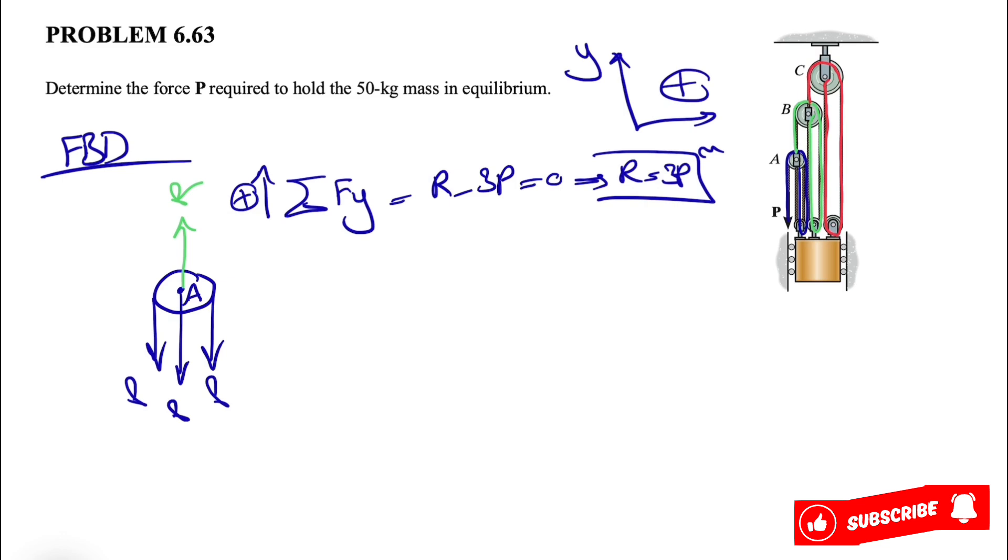That was the free body diagram for the first pulley. Let's move on to the pulley B. We have the same thing. We have B, and we have the force R that goes around that, one in the middle and one on the right side. And at the top, it connects to the other cable which we call the tension in that one T.